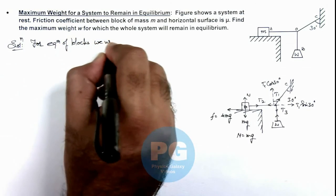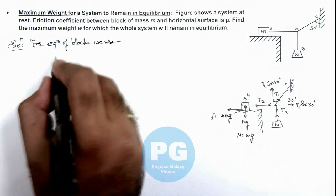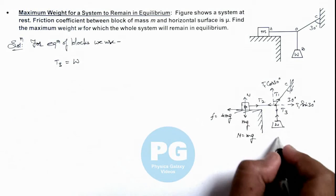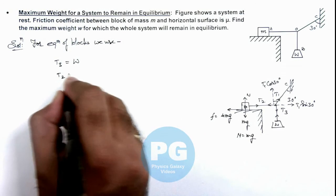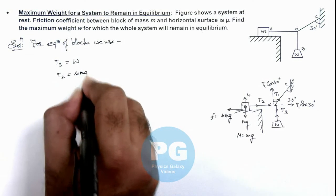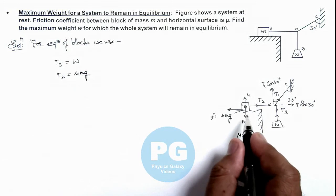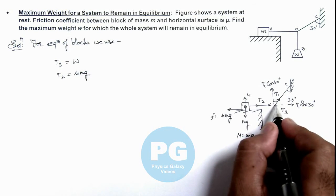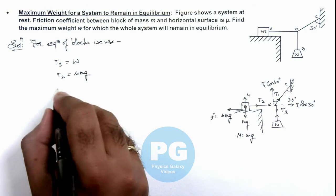Here we can write the value of tension t3 is equal to the weight w, and tension t2 is equal to mu mg. And in this situation, if we talk about the tension acting at the junction of the string, then we can write...